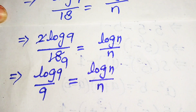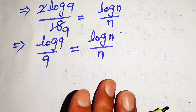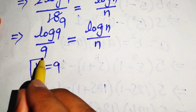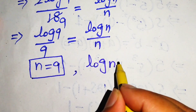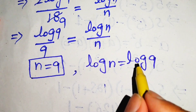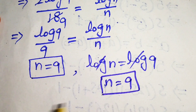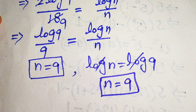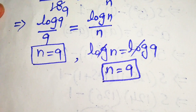Comparing both sides, we get n equals 9. Comparing the denominator terms gives log n equals log 9, so the logs cancel and we get n equals 9. From both methods we easily get the value of n equals 9, which is the final value of n.